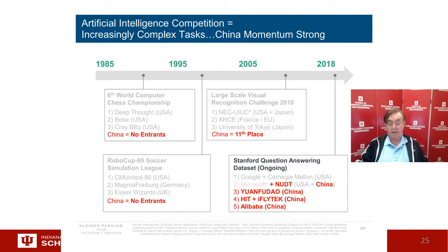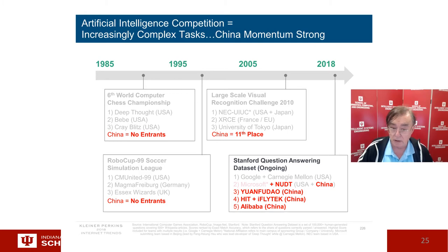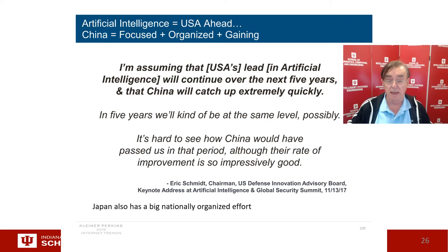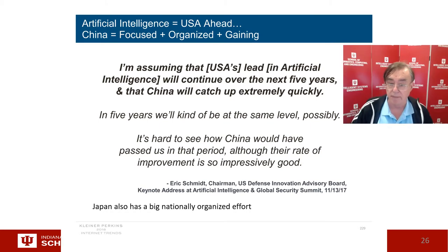Alibaba is of course China's answer to Amazon, and China is an emerging force in AI. They have big government initiatives, actually larger than those in the US. Eric Schmidt says China might catch up in five years. Japan also has a big national organization. Nations are going to be competing in AI — that's going to dominate the headlines of capabilities in AI over the next ten years.